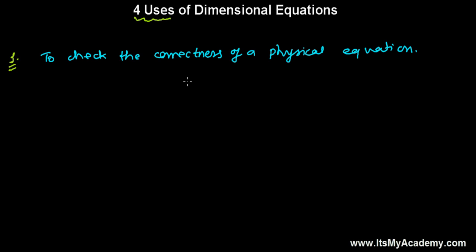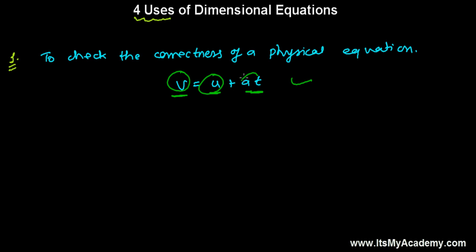Let me give an example. Let's say V equals to U plus AT. Do you think this equation is correct? If this equation is correct, then according to the Principle of Homogeneity, the dimension of V, dimension of U, and dimension of AT should all be the same. And if they are, then this equation is correct, otherwise not. So we'll be checking whether all of these have the same dimension or not — that's how we check the correctness of a physical equation.